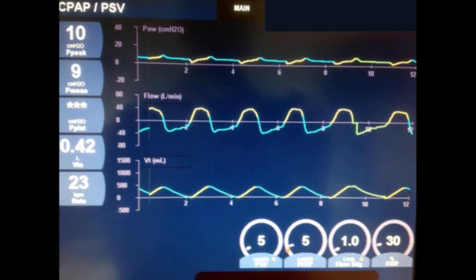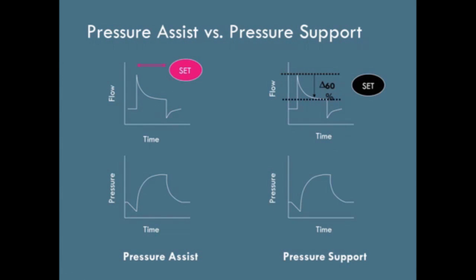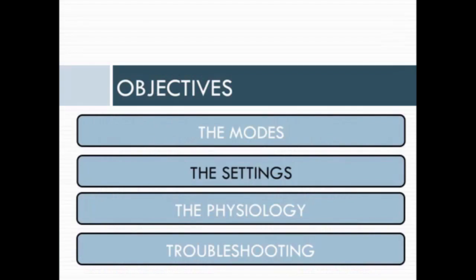Let's review the difference between pressure assist control and pressure support. On the left with pressure assist, you set an inspiratory pressure and that pressure is delivered for as long as the inspiratory time is set. Pressure support is different — what terminates the breath is a drop in flow. If the patient doesn't pull as hard against the ventilator, the flow drops quicker and the breath is shorter. Although you set the percent drop in flow that will stop the breath, the patient's interaction with the ventilator determines when that breath stops.